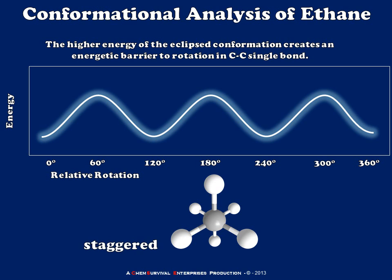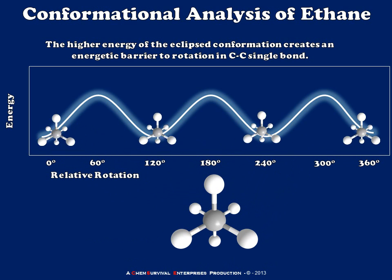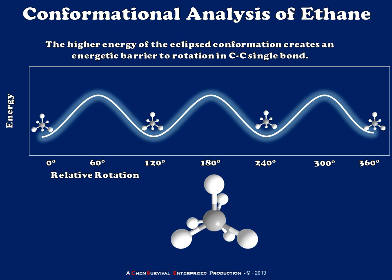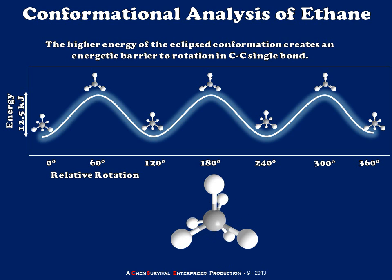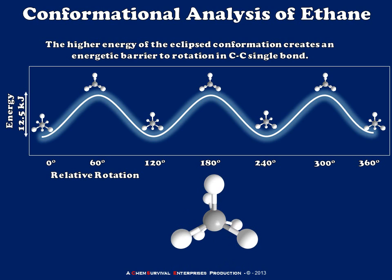The local minima in the energy correspond to the staggered conformation. And a 60 degree rotation leads me to the local maxima, which are the eclipsed conformations. And in the case of the ethane molecule, I can do this pretty quickly because all three of those staggered and eclipsed configurations, relatively speaking, have the same energy.